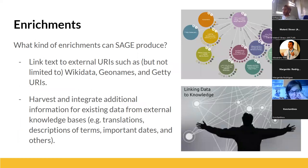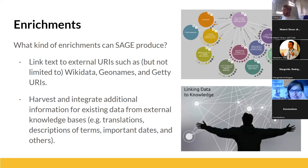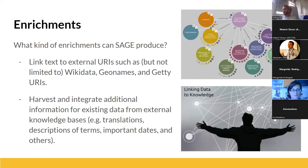What kind of enrichment can SHADES produce? The main functionality is that it links text to external URIs. We can link our records with external knowledge bases like Wikidata, GeoNames, and various vocabularies. After linking to an external knowledge base, you can harvest additional information — for instance, since Wikidata is also linked to other vocabularies and knowledge bases, this gives you broad connectivity.